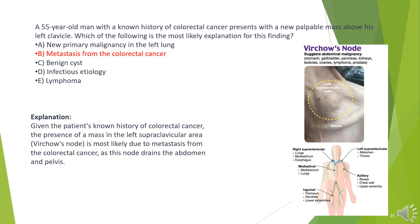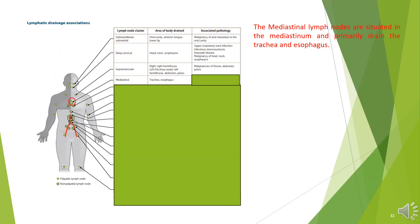The answer is B. Metastasis from the colorectal cancer. Given the patient's known history of colorectal cancer, the presence of a mass in the left supraclavicular area — Virchow's node — is most likely due to metastasis from the colorectal cancer, as this node drains the abdomen and pelvis.